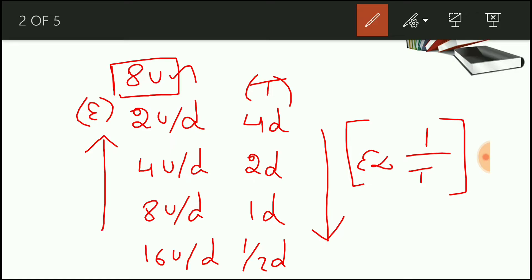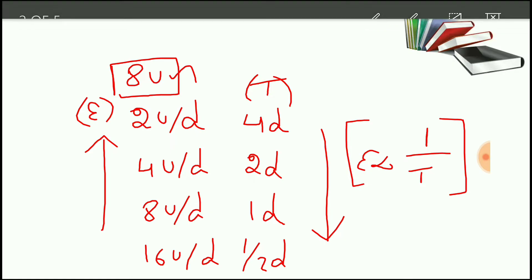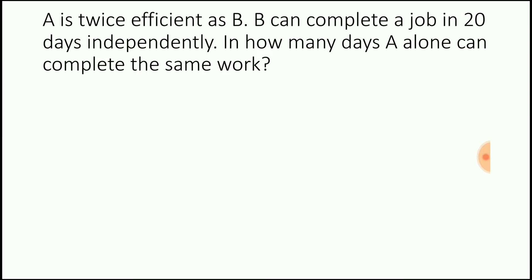We will try to put this concept in an example. So here you have an example. A is twice efficient as B. B can complete a job in 20 days independently. In how many days A alone can complete the same work?